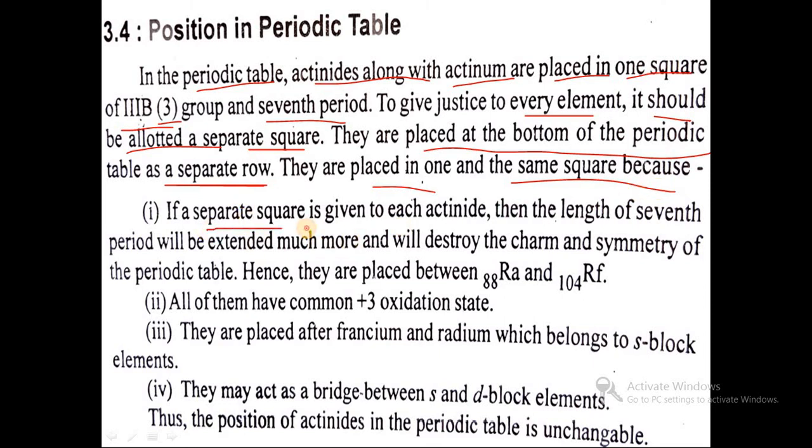Because if a separate square is given to each actinide, then the length of the seventh period will be extended much more and will destroy the charm and symmetry of the periodic table. Hence they are placed between radium, element 88, and rutherfordium, 104.